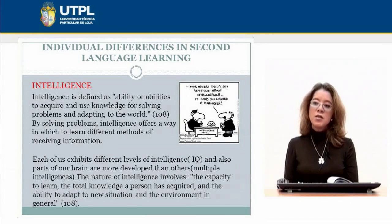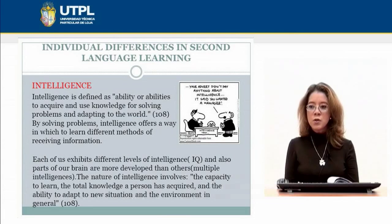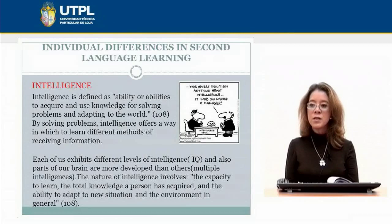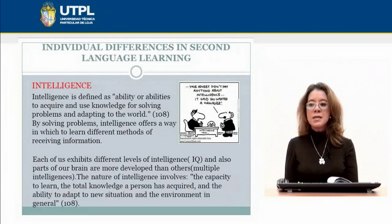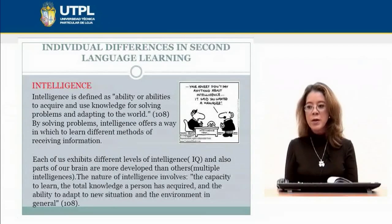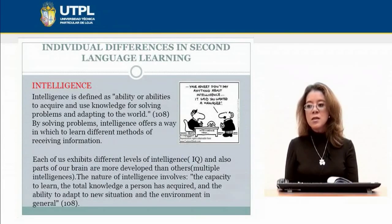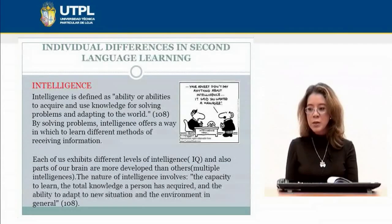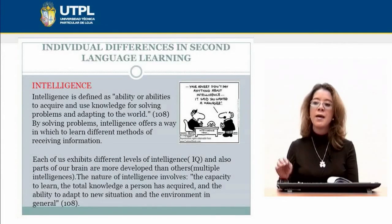What is intelligence? Intelligence is defined as the ability or abilities to acquire and use knowledge for solving problems and adapting to the world. By solving problems, intelligence offers a way to learn different methods of receiving information. Each of us exhibits different levels of intelligence, or IQ, and parts of our brain are more developed than others. The nature of intelligence involves the capacity to learn, the total knowledge a person has acquired, and the ability to adapt to new situations and environments in general.